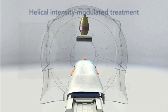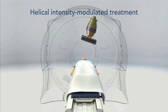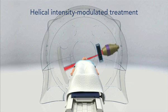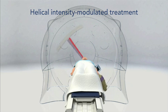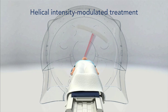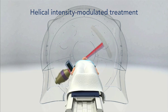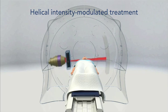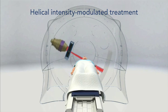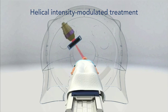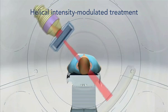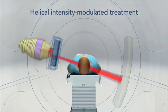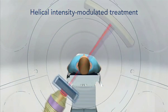For treatment delivery, the same helical rotations of the X-ray beam source are used. This time, however, the intensity of the beam is changed rapidly during each rotation, according to the shape of the tumor, using thin tungsten leaves that block or unblock the beam.